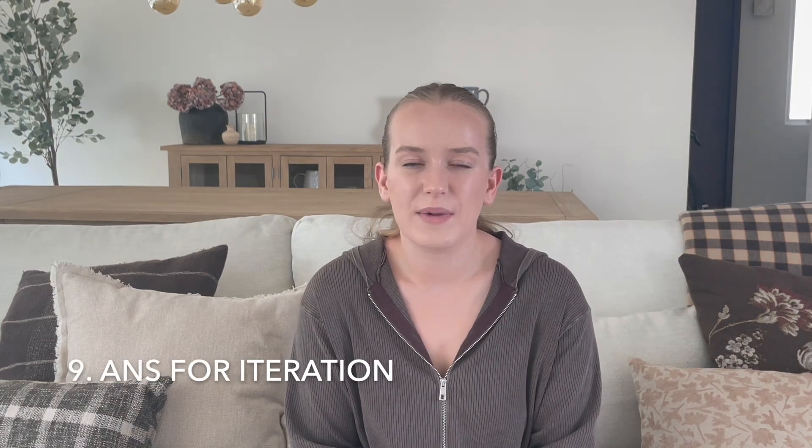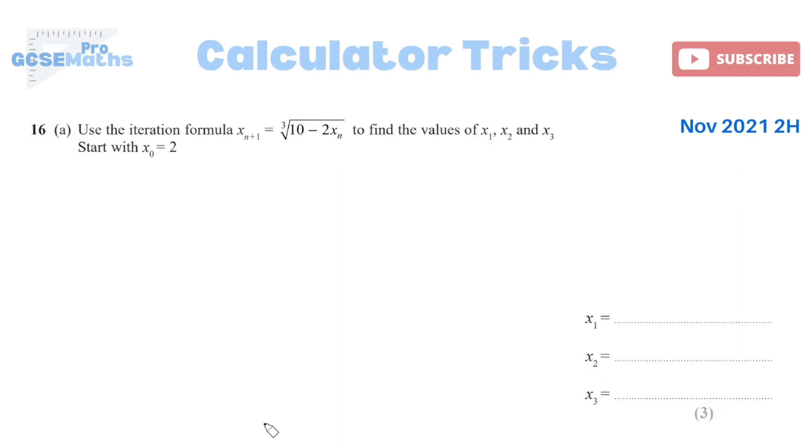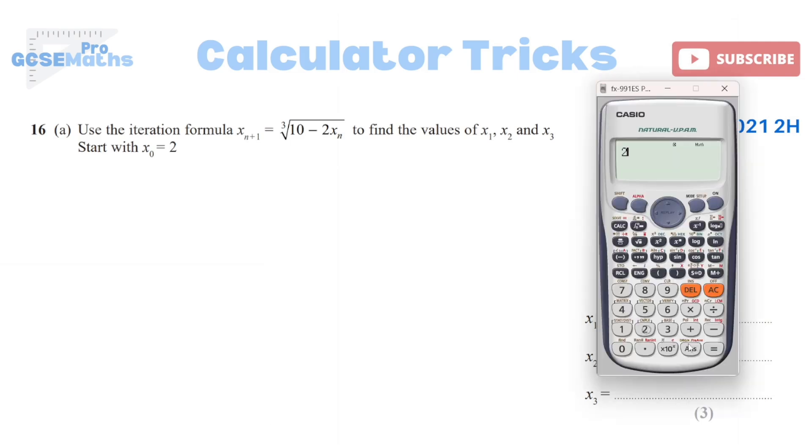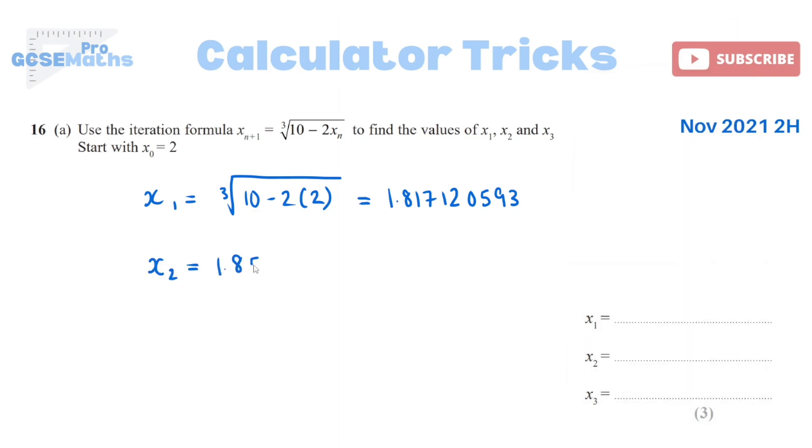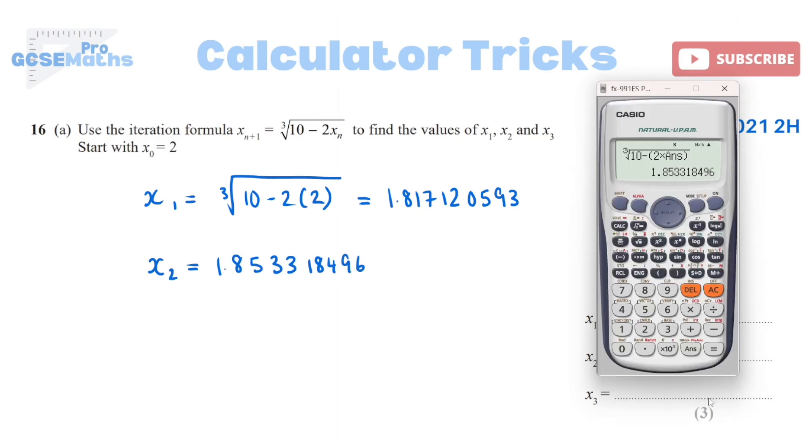The other use is then with iteration. It makes it a lot easier if you have an iteration question. Because we are given a formula and normally you're asked to find out three values by inputting your previous answer into that formula three times. So the way you can set up your calculator to do iteration is double check what the starting number is. In this case, do you see how it says start with x0 is 2. So 2 is my starting number. I will put 2 in my calculator as it is. Press equals. Now it's in my answer memory, isn't it? Then I will get rid of that and I will type in the whole equation. Whatever the equation is depending on your question. So in this case, I've got the cube root of 10 minus 2. Now, where it says x, I'm going to put my answer button. That's my whole formula. So now if I press equals once, that's my value for x1. 1.817... Then I press equals again. That's my next value. 1.8533. And I don't have to therefore type in all of those decimals every time. Obviously do it one more time. 1.846... So that's how you can use the answer button for iteration.